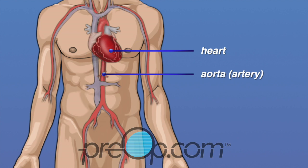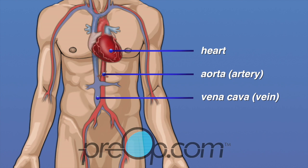The aorta is the largest artery in the body and the blood it carries is rich with oxygen. Veins are a different type of blood vessel that carry blood back to the heart. The vena cava is the largest vein in the body and carries oxygen-poor blood back to the heart.